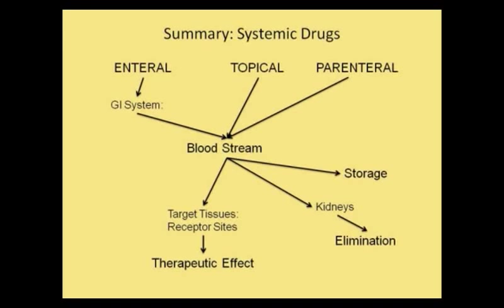Here I am showing a summary of systemic drug flow. When a drug is administered — whether internally, topically, or parenterally — if taken internally it goes to the GI system, then to the bloodstream, and from there either to the target tissue and receptor site for therapeutic effect, or to storage, or to the kidney for elimination. Similarly, when taken topically or parenterally, it enters the bloodstream and either goes to storage, to the kidney for elimination, or to the target receptor site for therapeutic effect.